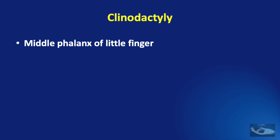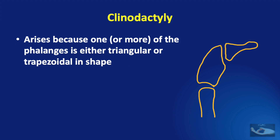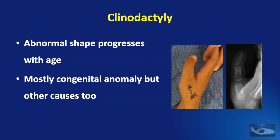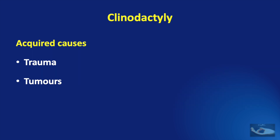Congenital clinodactyly usually affects the middle phalanx of the little finger or the proximal phalanx of the thumb. The deformity arises because one or more of the phalanges is either triangular or trapezoidal in shape, causing the alignment of the adjacent IP joint to deviate away from perpendicular to the normal longitudinal axis of the finger. This abnormal shape progresses with age due to ongoing asymmetric longitudinal growth of the phalanx. Though most clinodactyly occurs congenitally, acquired causes include trauma to the growth plate from injury, frostbite, inflammatory arthritis, or bone tumors.